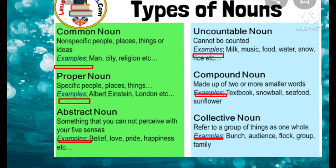These things will come under uncountable noun. Next, compound noun — made up of two or more smaller words.